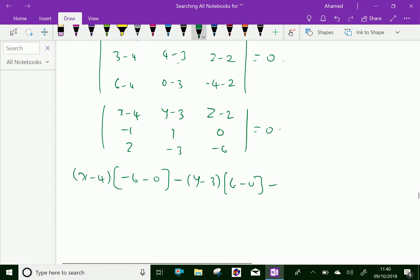Then plus z minus 2 gives, minus 1 times minus 3 is 3, one into 2 is 2, that is 3 minus 2.